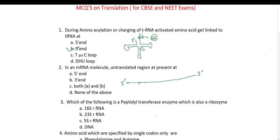There is a start codon AUG and a stop codon on the mRNA, along with multiple other codons required for the polypeptide. Before the start codon AUG and after the stop codon, there are sequences which do not get translated. These sequences are called UTRs — untranslated regions. They are present both at the 5' end as well as the 3' end. So the answer is both A and B.